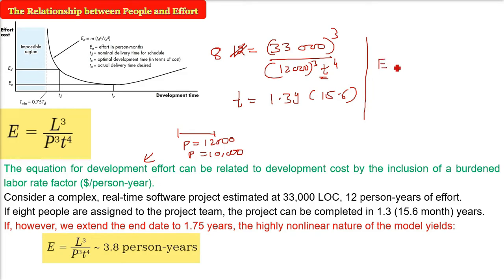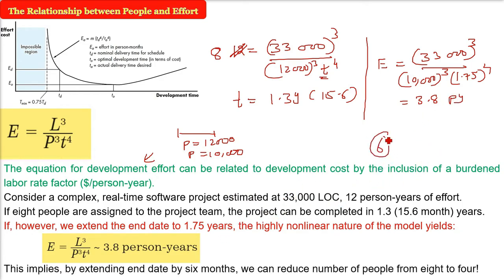The effort will be, L is 33,000, P I'm taking as 10,000 because we have stretched it and changed the time, and time is 1.75 to the power 4. When you compute it, the effort in person years will come as 3.8. Now, that means that if you extend it from 15.6 to 20.1 months, that is extended the end date by 6 months, we can reduce the number of people from 8 to 4. This is what the relationship between people and effort means.